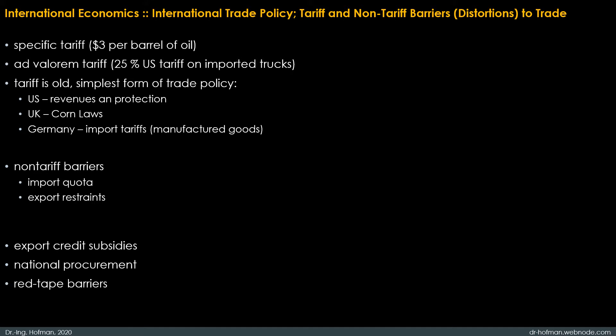In the early 19th century, for example, the U.K. used tariffs—the famous Corn Laws—to protect its agriculture from import competition. Both Germany and the U.S. protected their new industrial sectors by imposing tariffs on imports of manufactured goods. The importance of tariffs has declined in modern times because modern governments usually prefer to protect domestic industries through a variety of non-tariff barriers, such as import quotas—limitations on the quantity of imports—and export restraints, limitations on the quantity of exports usually imposed by the exporting country at the importing country's request. Nonetheless, an understanding of the effects of tariffs remains vital for understanding other trade policies.